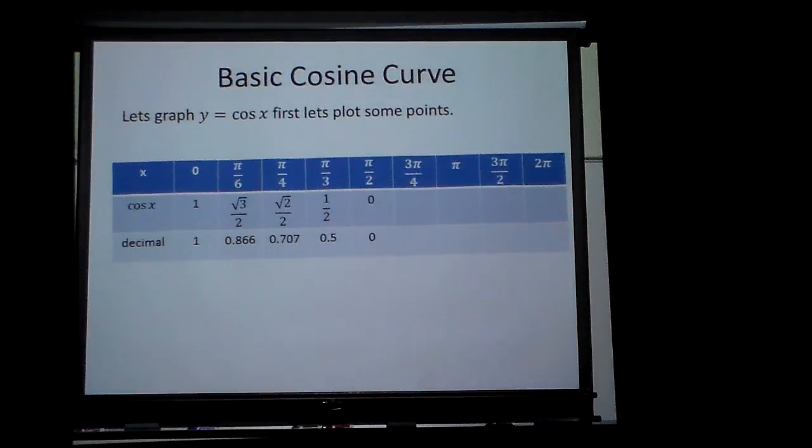But at three π over four, cosine is negative square root of two over two, which would be negative 0.707. And then at π, cosine is negative one, or negative one as a decimal.